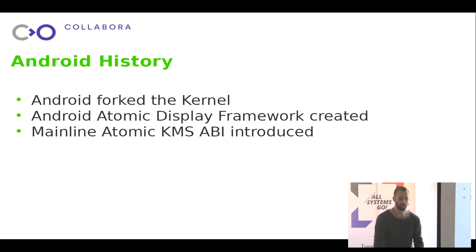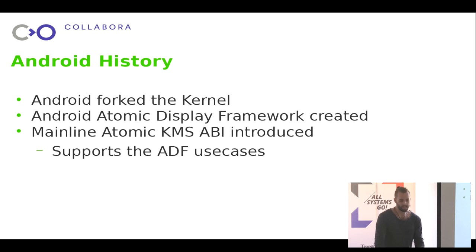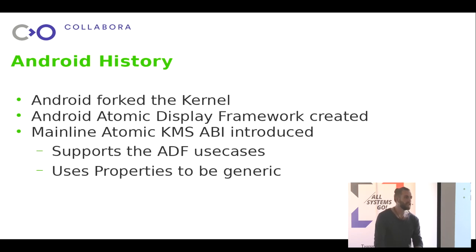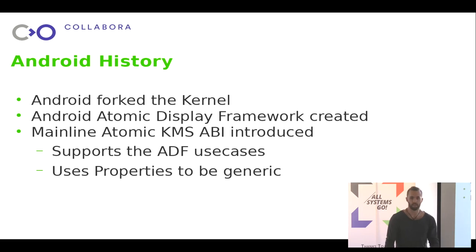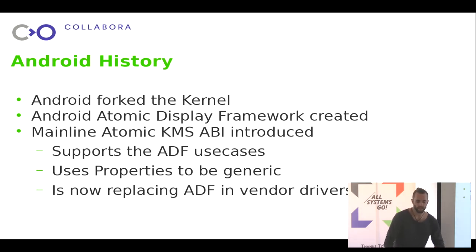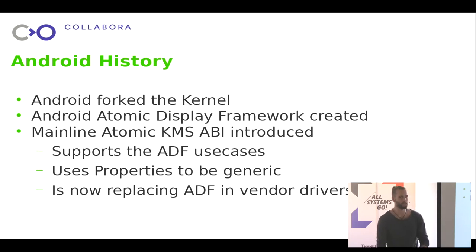This is where we were until the atomic KMS ABI was introduced by Daniel Vetter, and this solves our problems. It supports all of the ADF use cases. It uses a thing called properties - essentially just strings with values attached to them - and you can attach them to any object in the graphics pipeline. So you can be very generic and support wonderfully weird hardware without rewriting the kernel every single time. It is now replacing ADF, and all vendors are on board, at least slowly rolling it out.